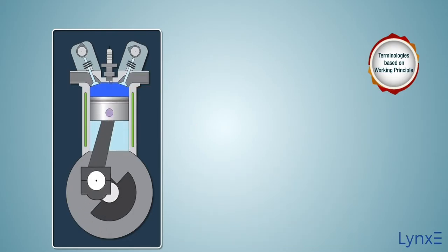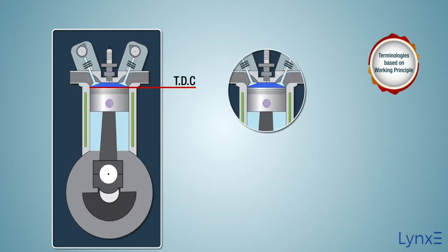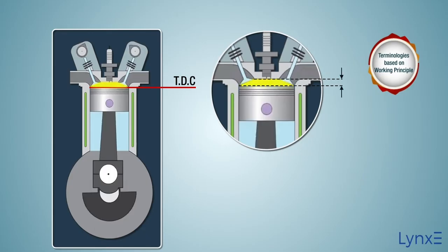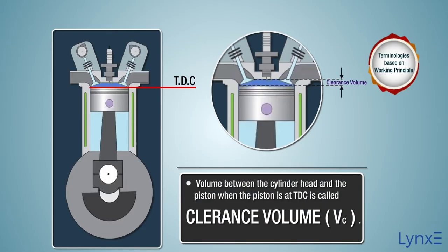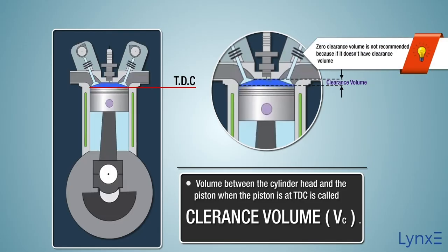When the piston is at the top dead center, the volume contained in the cylinder above the top of the piston is called the clearance volume. Zero clearance volume is not recommended, because without clearance volume it is difficult for a flame to expand — the flame needs a minimum space.